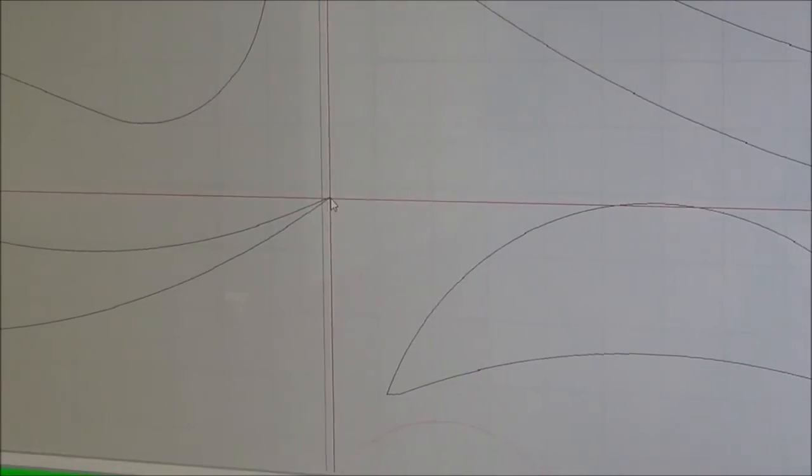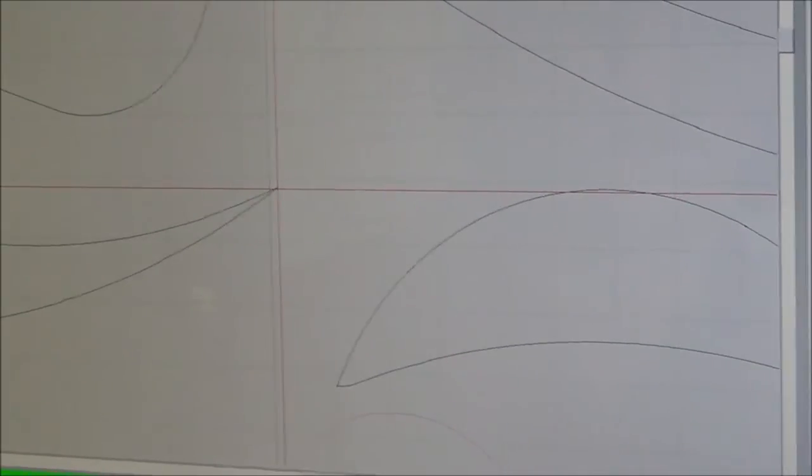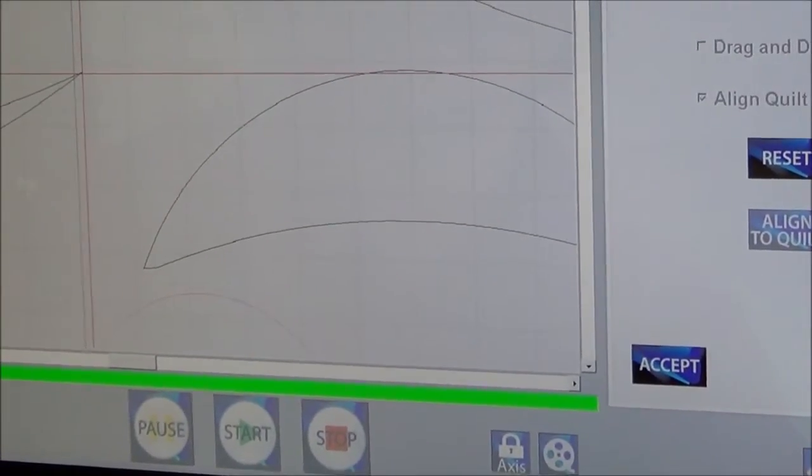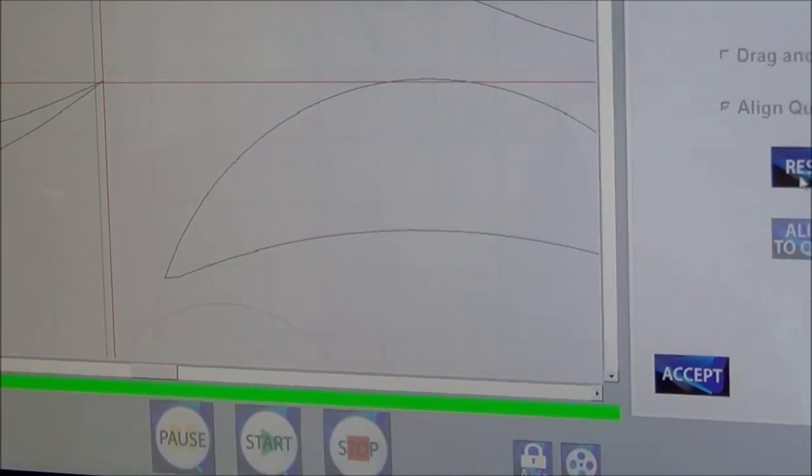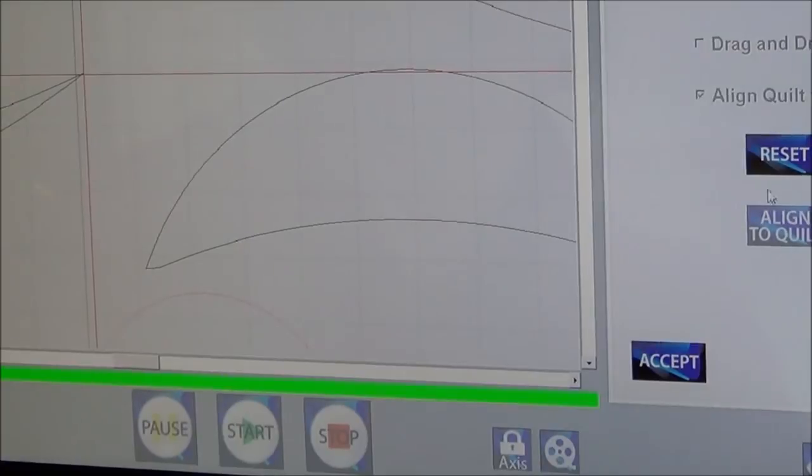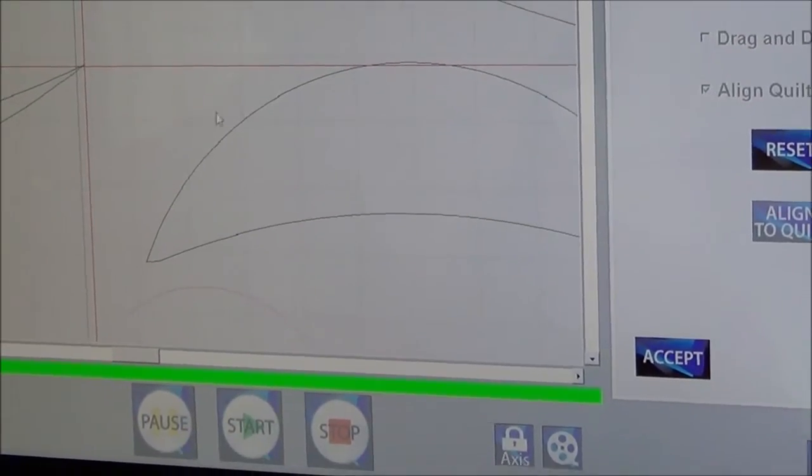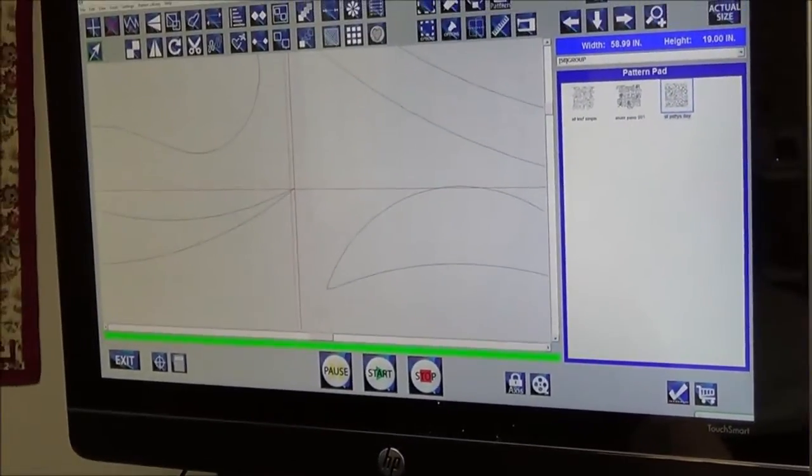And if we are happy with it we accept it. I'm happy with it. But if it hadn't worked out I can always cancel or reset to redo it. Cancel would take me out of the tool. Reset would just let me move my dot. So I'm going to accept and then go back to full view.